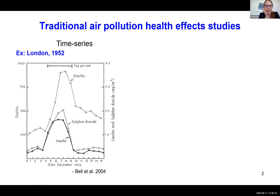To motivate the sensor project, I wanted to take us back in time to when people first started studying air pollution health effects. Time series studies were one of the classical study designs. Back in London in 1952 during that dramatic air pollution event — the great smog — you really didn't need fancy statistical methods. There was a period where you could see that air pollution had a big spike, and unfortunately deaths had a big spike too, looking at daily death counts. It became really obvious that there was a big association between air pollution and deaths.